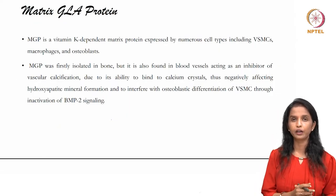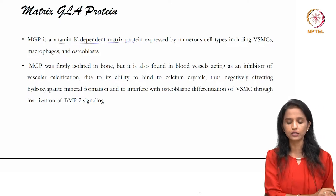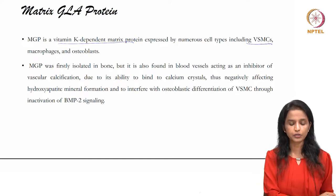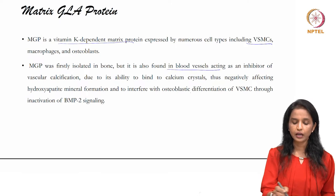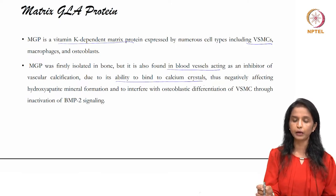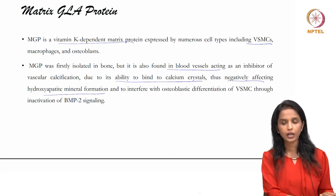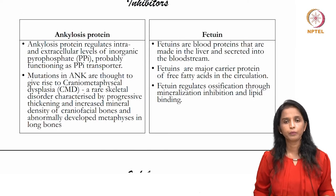Next to pyrophosphates, matrix GLA proteins are also important inhibitors. Matrix GLA proteins are vitamin K-dependent matrix proteins expressed by numerous cell types including stromal stem cells, macrophages, and osteoblasts. Found in blood vessels, they have the ability to bind to calcium crystals, negatively affecting hydroxyapatite mineral formation and interfering with osteoblastic differentiation.